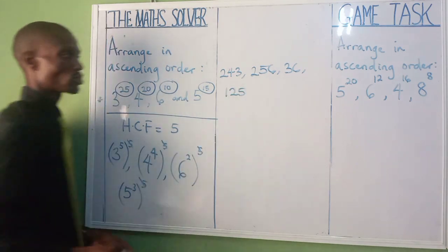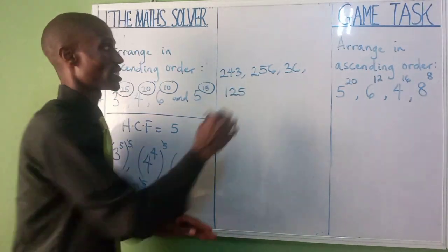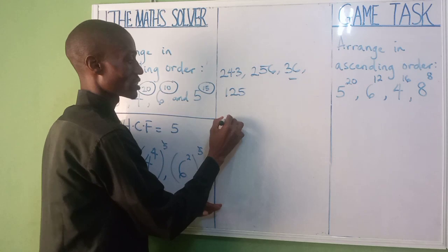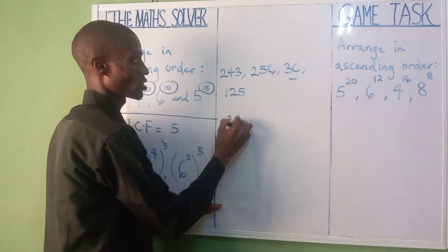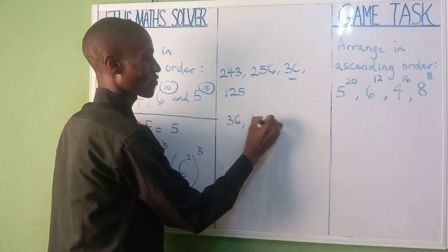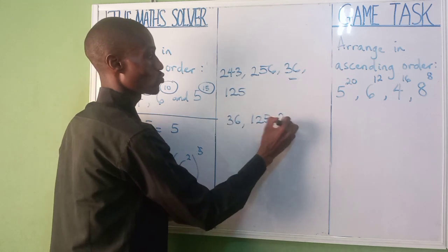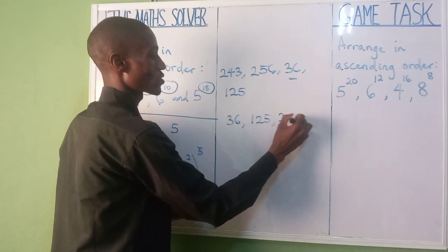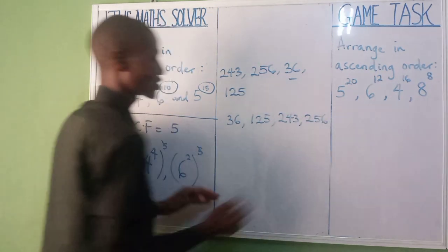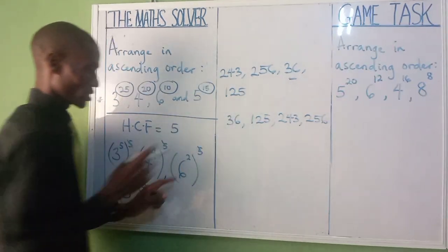Now let's arrange in ascending order from the lowest. The smallest is thirty-six, followed by one hundred and twenty-five, followed by two hundred and forty-three, and the largest is two hundred and fifty-six.